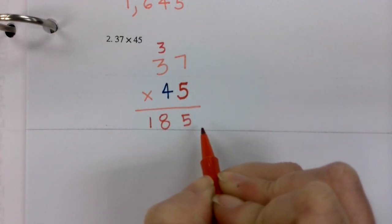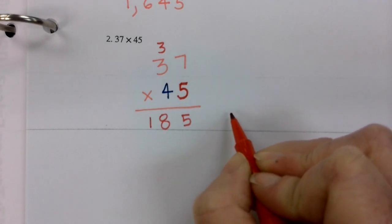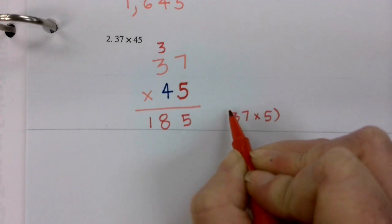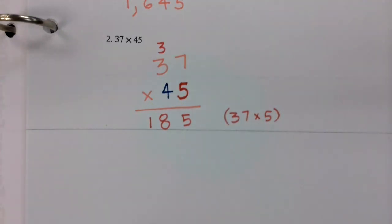Now, once again, this is really the answer to what 37 times five equals. That is that partial product. Now, before I move on to the four, I'm going to cross off what was carried.